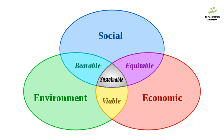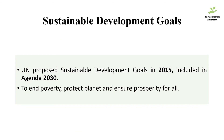Finally, the United Nations proposed the Sustainable Development Goals in 2015, included in its Agenda 2030, basically to end poverty, to protect the planet, and to ensure prosperity for all as part of a new sustainable development agenda.